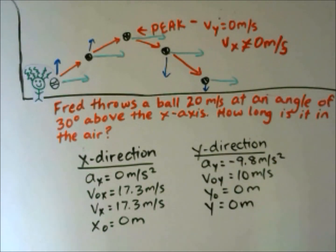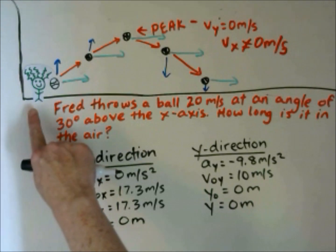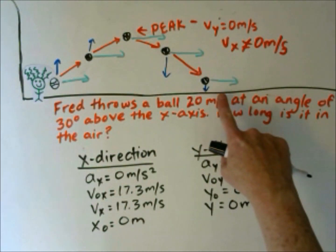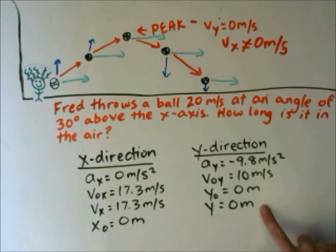In the y-direction, we know the acceleration is always negative 9.8 meters per second squared. We calculated his initial velocity in the y-direction, and it's positive because it's going up, of 10 meters per second. We know the initial position we can define as 0 meters in the y-direction. But the ball falls back down to the ground, so its final position in the y-direction is also 0 meters. We're going to use this information to help us solve the problem.